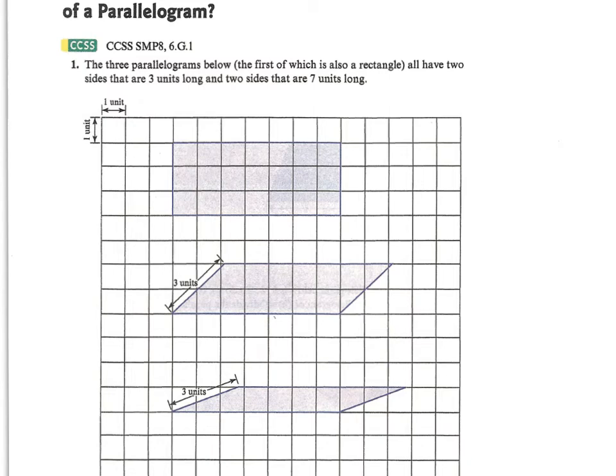Take a look at the three parallelograms shown on the grid. You see that each of them have two sides that are three units long and two sides that are seven units long. Go ahead and mark each of those lengths on those figures.